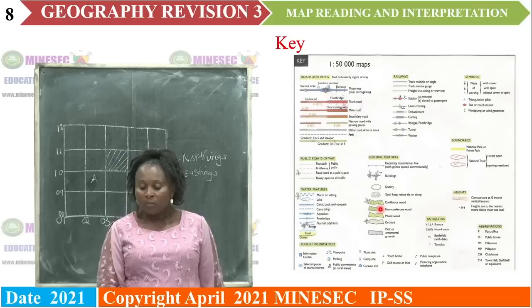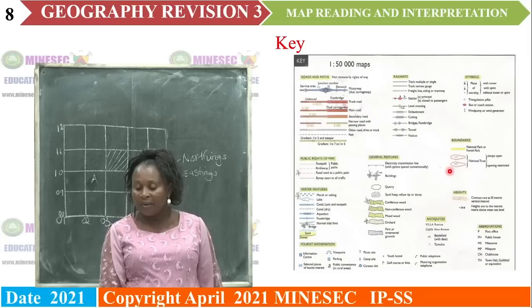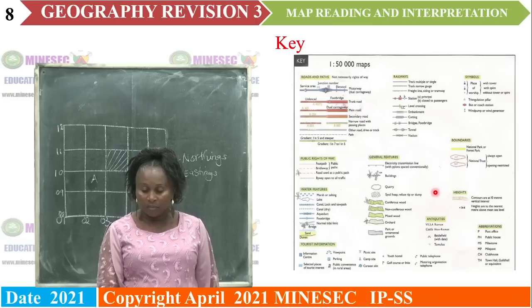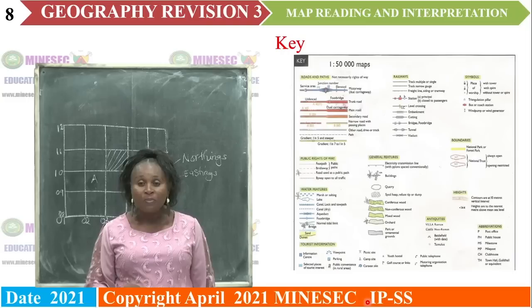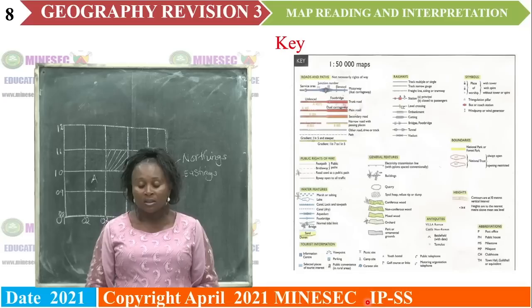Vegetation is also represented. The nature of the land is also represented by way of contours. Contours are lines joining places with equal heights above sea level. In a nutshell, you must be able to read and interpret your key. If not, you will be working at a loss because the key on a topographic map gives you all the answers to the questions that will be asked.